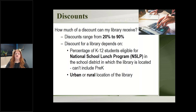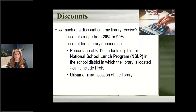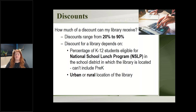You may serve children from other school districts, but for E-Rate purposes, when calculating this discount, you look at whatever school district your library is physically located in. Additionally, it is only K through 12 — pre-K numbers have to be removed from the calculation. Then you look to see whether you're considered urban or rural based on U.S. Census data. In Nebraska, most of us are rural, so we get a slightly higher discount. Urban would be mainly our larger cities.